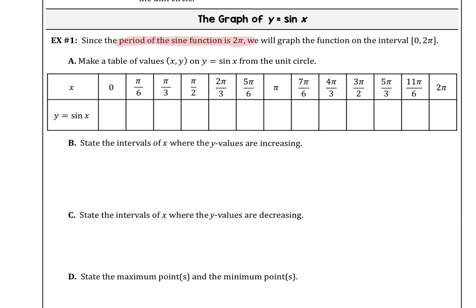We're going to make tables from our unit circle. At the 3 o'clock position, when x equals 0, the y value equals 0 as well. At pi over 6, the y coordinate — because we're talking about sine — is 1/2. At pi over 3, that's root 3 over 2. At pi over 2, think about the 12 o'clock position on an analog clock — that's a y value of 1. This is our maximum; that's as far as our range is going to get.